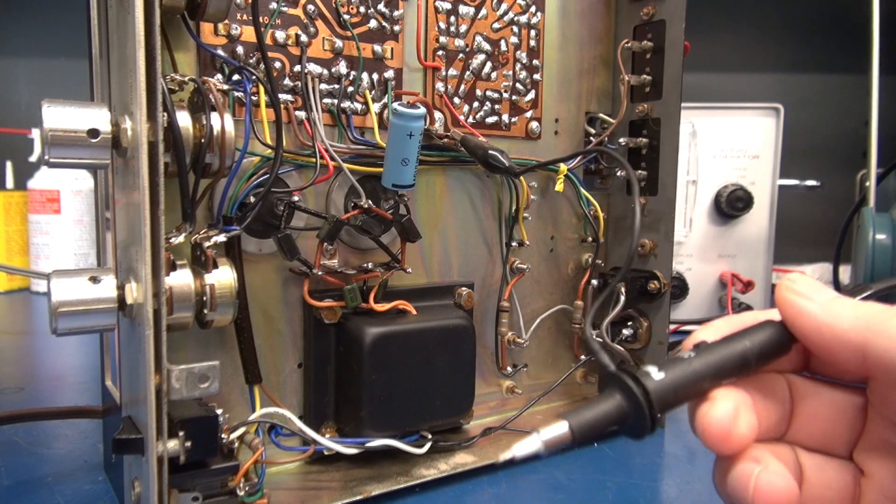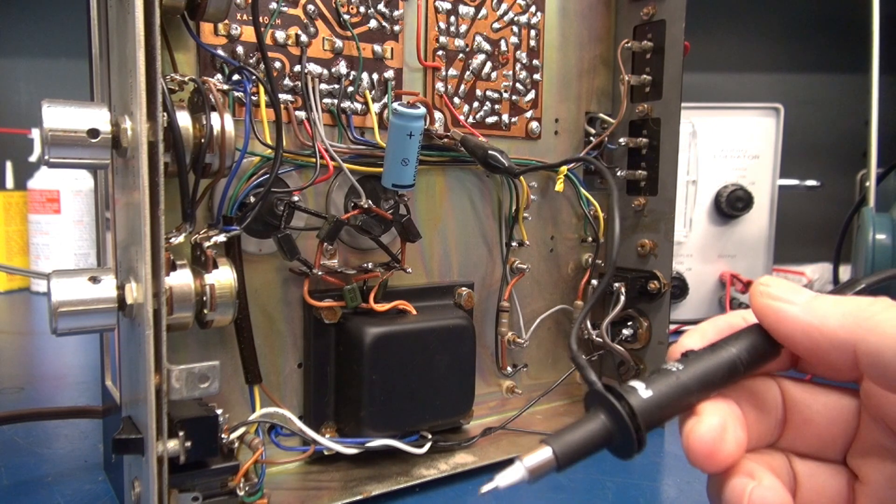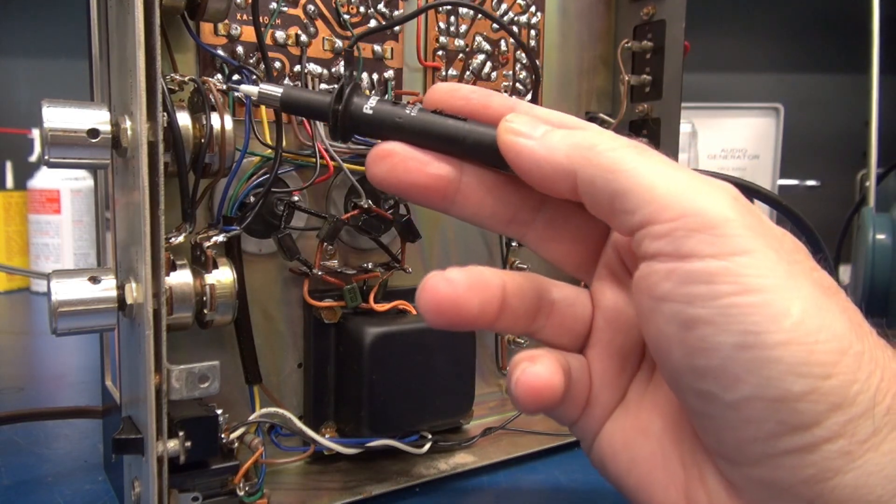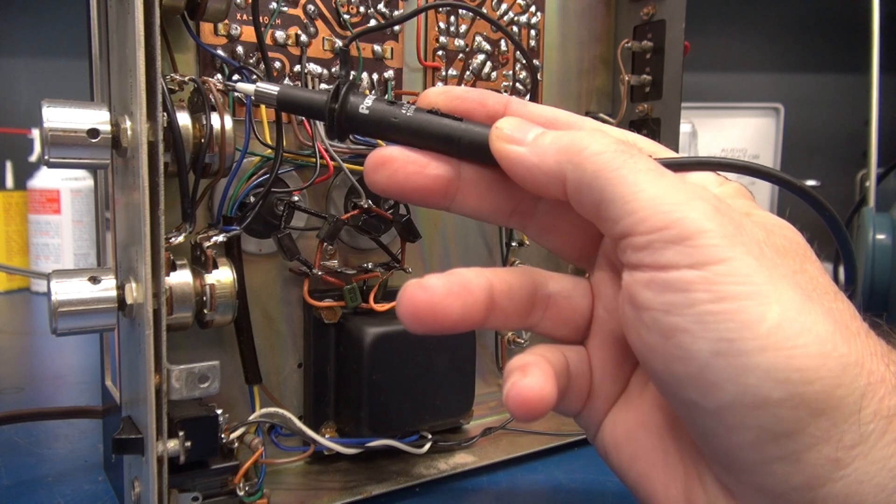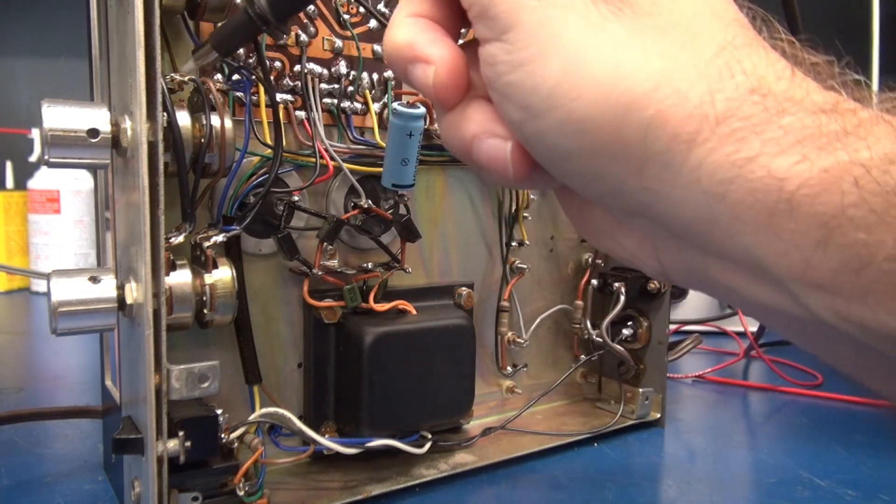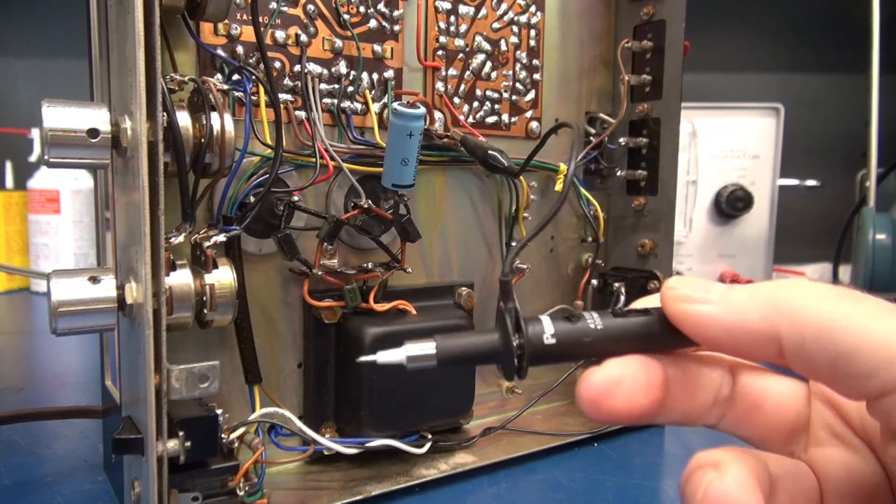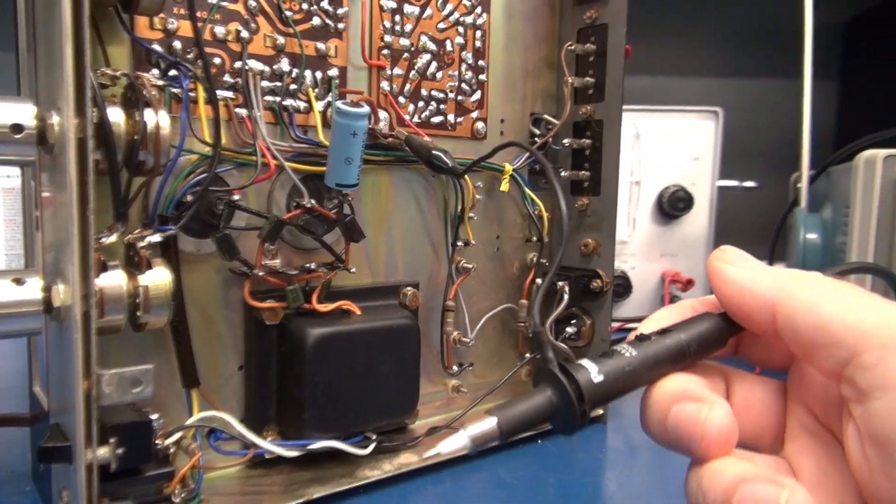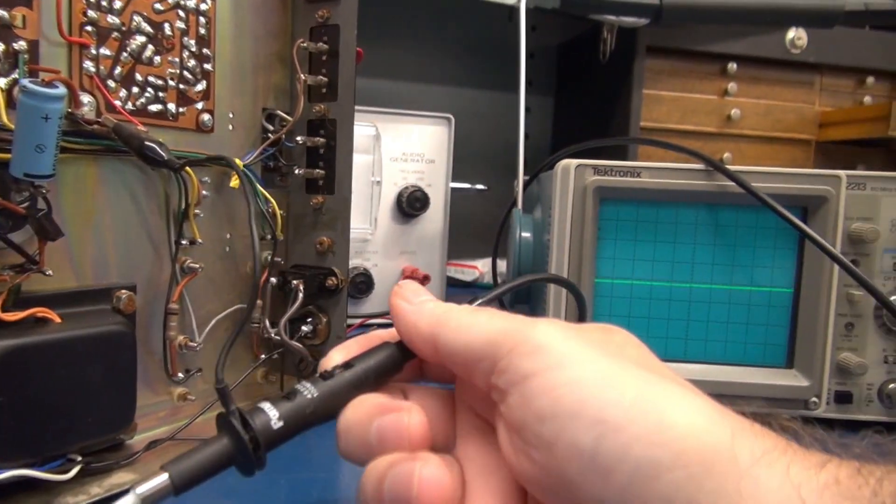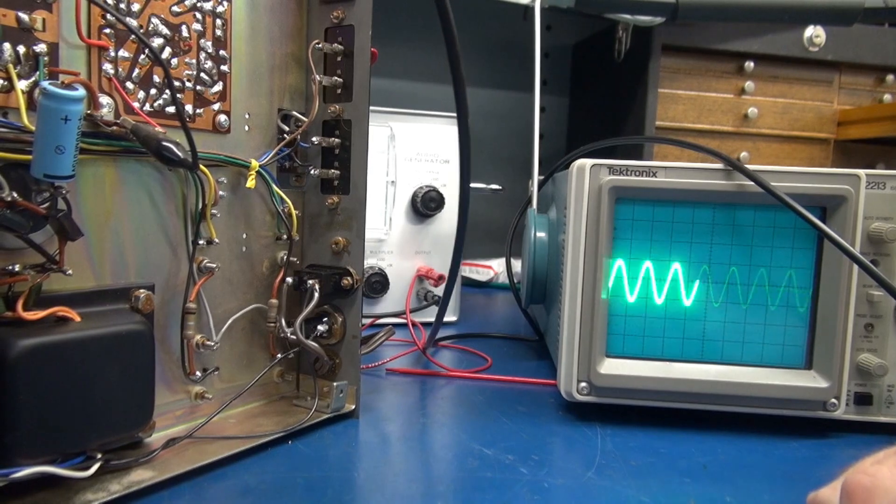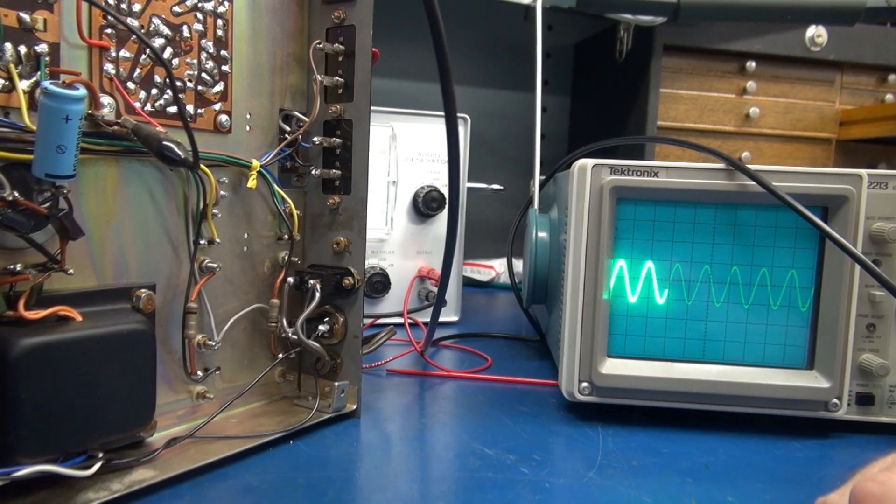Alright, it's kind of tight working in here. I'll try to show you guys as best I can what's going on. This is the balance control, so you should have a signal on this arm of it and this arm. Okay, so I'm going to go over to the scope. Here is the right channel coming into the balance control.